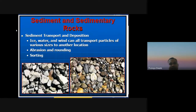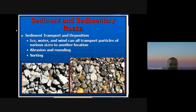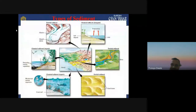Sediment can be transported by ice, water, and wind to another location. Abrasion, rounding, and sorting occur during transport. Different types of sediment include detritus sediment, chemical sediment, and oceanic sediment.